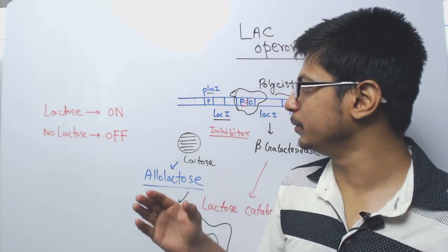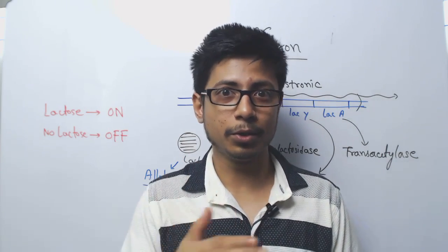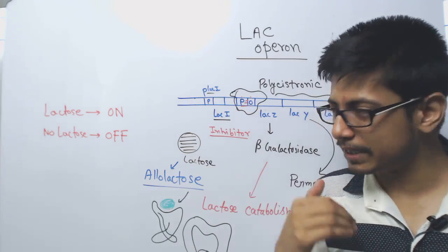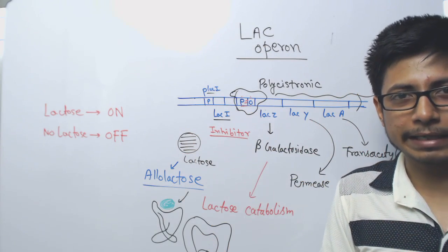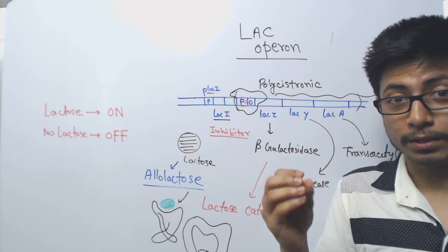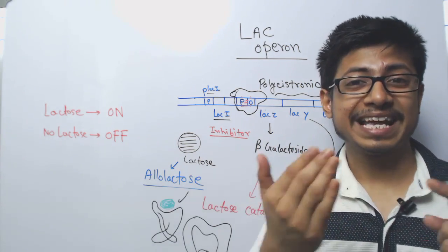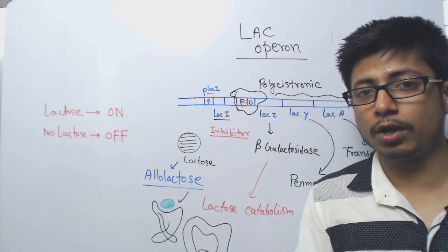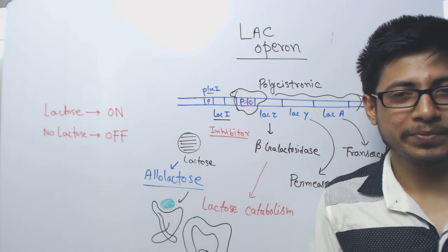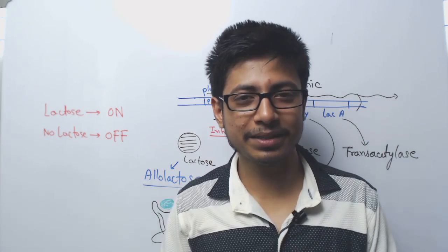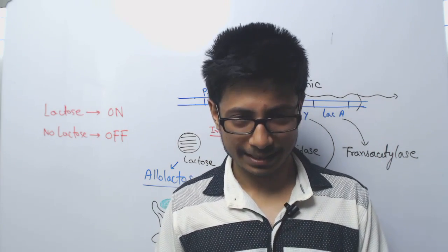In the next video, I am going to tell you about the regulation of this lac operon by the presence of another sugar molecule — glucose. Glucose regulates this whole process in a fine-tuning process. The presence of glucose will not allow the lac operon to turn on; it is known as catabolite repression. We will talk about the role of glucose and lactose during the lac operon process in the next video. If you like this video, please hit the like button, subscribe to my channel, and share this video with your friends. Thank you.